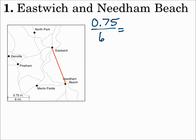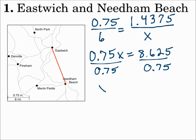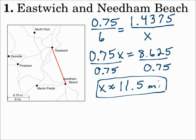The map distance was 1 and 7 sixteenths inches. As a decimal, 1 and 7 sixteenths is 1.4375. That's the map distance over the actual distance x. Cross multiply and solve, and you get 11.5 miles. Make sure you label it properly — that's miles.